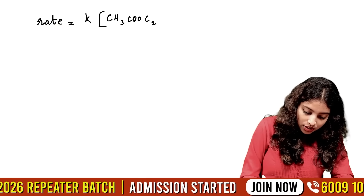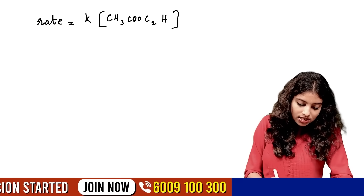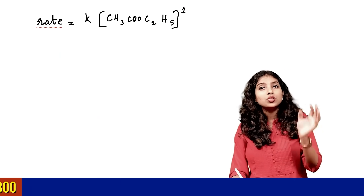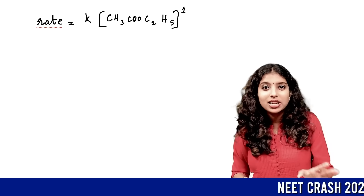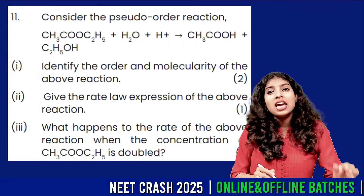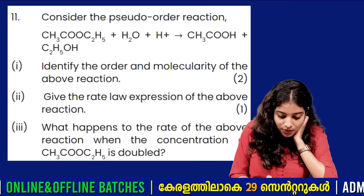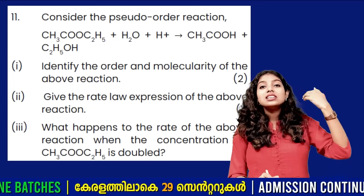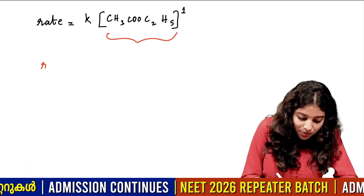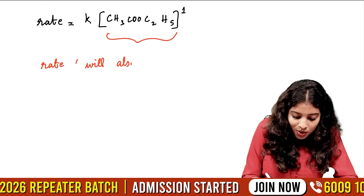Rate is equal to K × [CH₃COOC₂H₅] raised to 1. That is the rate equation. What happens to the rate of the above reaction if the concentration is doubled? Since rate is proportional to concentration, the rate will also double.